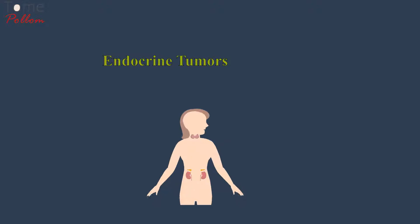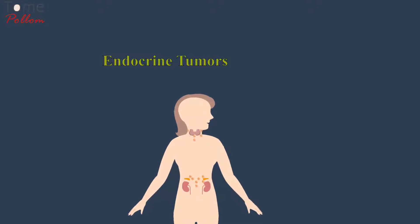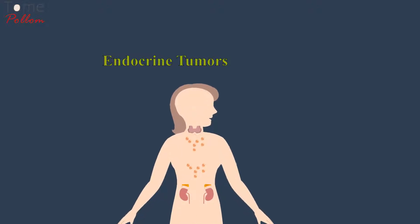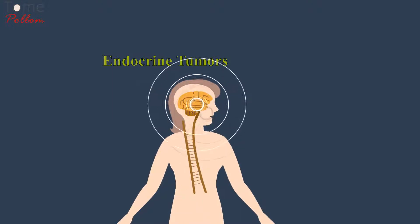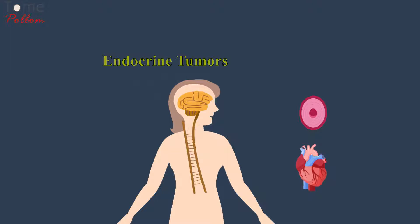Endocrine tumors. Another example would be endocrine tumors that hypersecrete cortisol or thyroid hormone, both of which can potentiate the effects of the sympathetic nervous system and cause arteriole constriction, increased cardiac contraction, and blood volume expansion by activating the RAS.